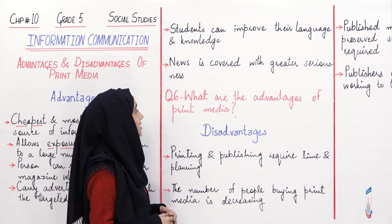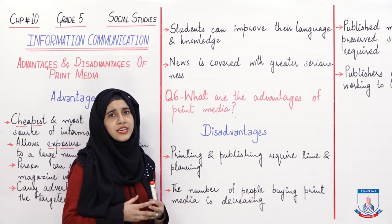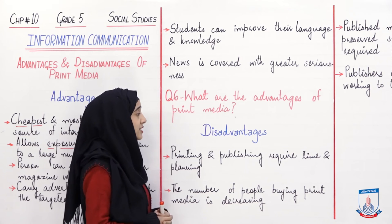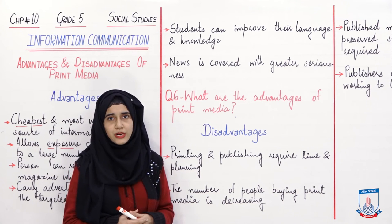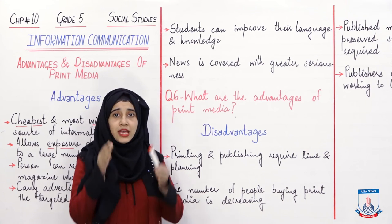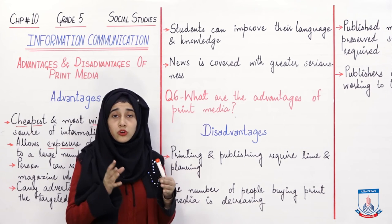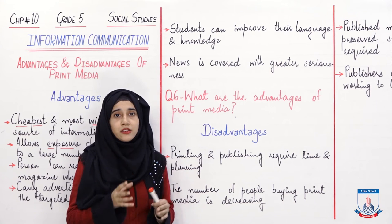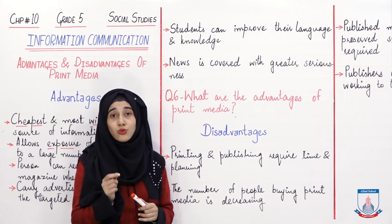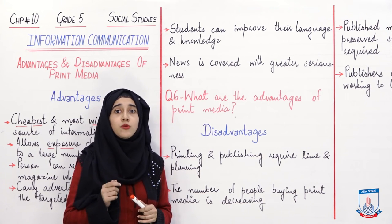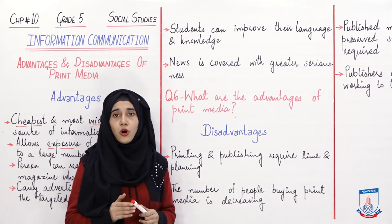This covers question number 6 from your exercise: 'What are the advantages of print media?' Now let's talk about the disadvantages. The first disadvantage is that printing and publishing requires time and planning — deciding how many pages, which articles to publish, how to arrange them. Many people submit articles and want them published; articles are read, a few are selected, then edited before publishing. This whole process takes a lot of time.